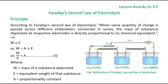According to Faraday's second law of electrolysis, when the same quantity of charge is passed across different voltimeters connected in series, the mass of substance deposited at respective electrodes is directly proportional to its chemical equivalent.